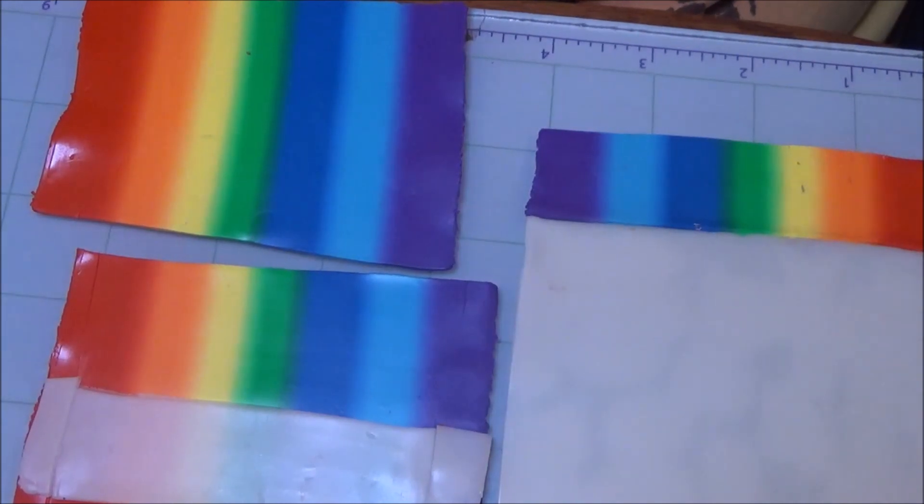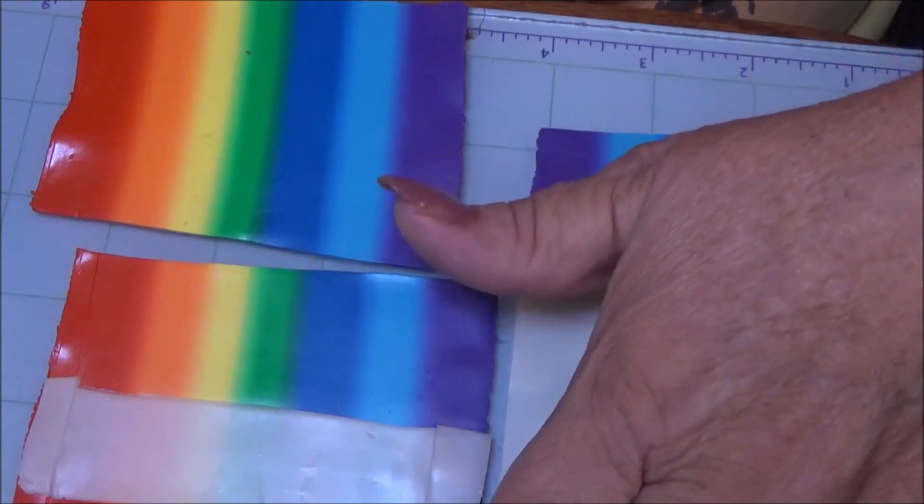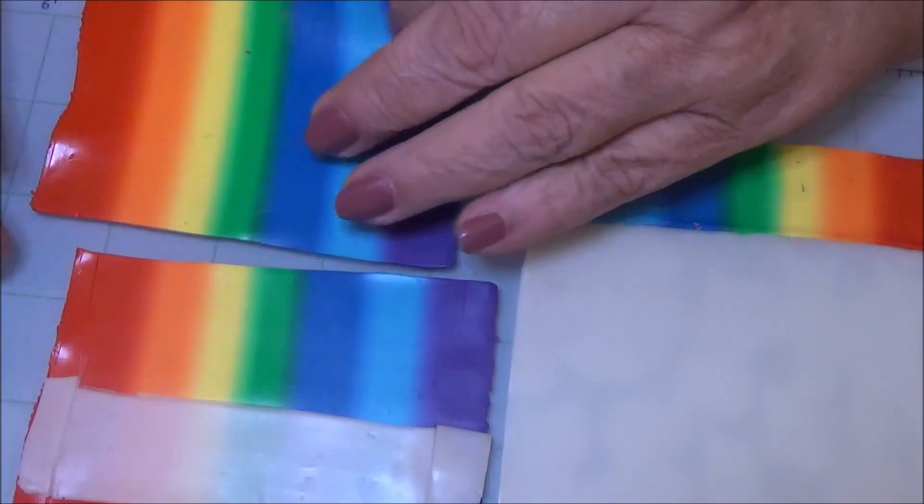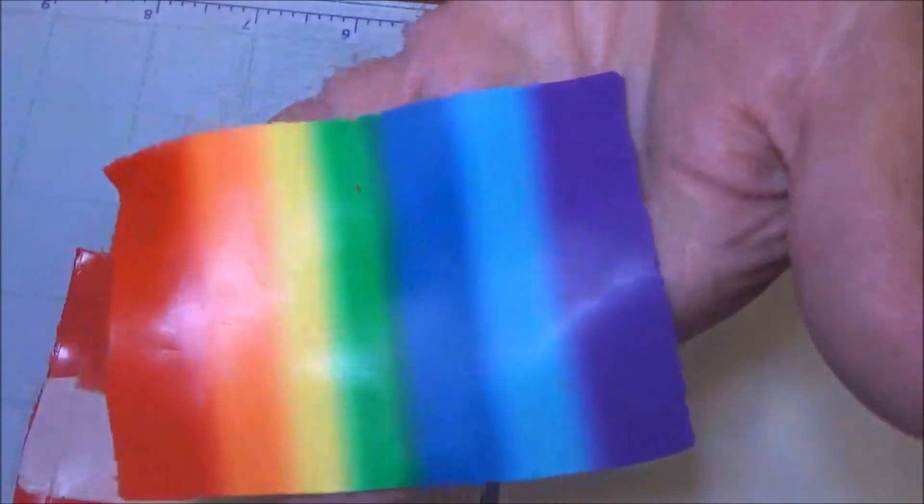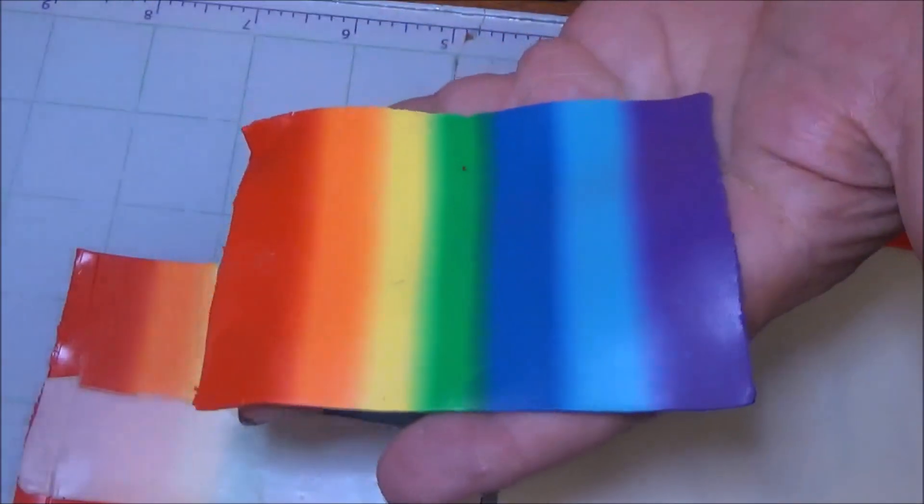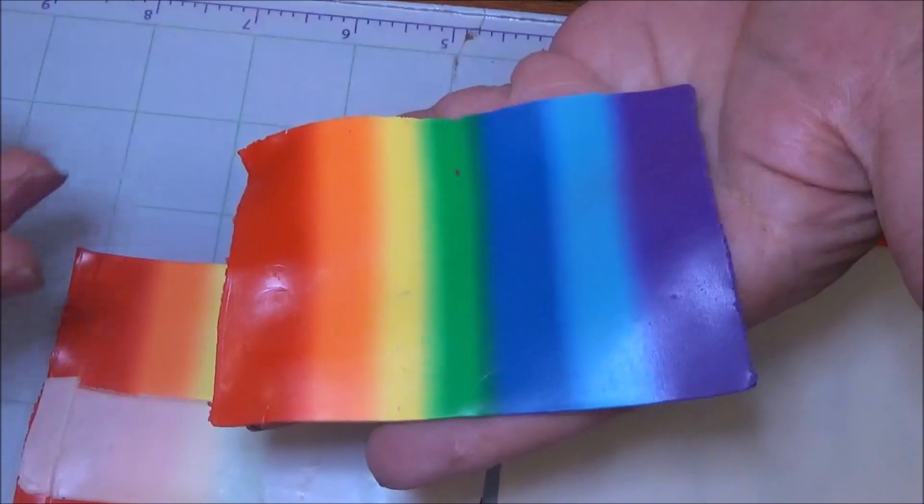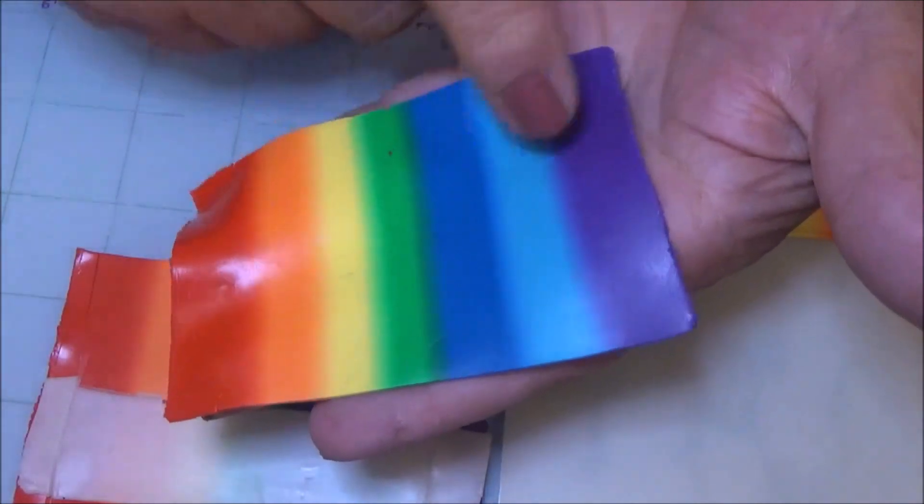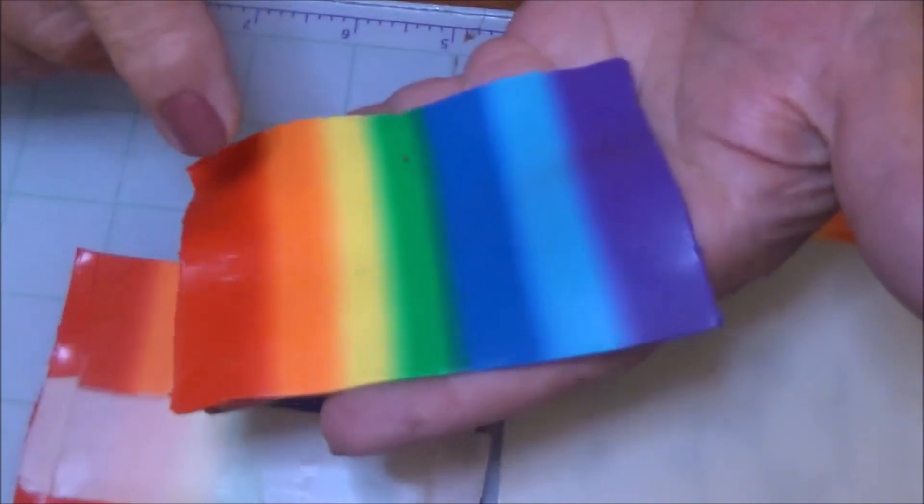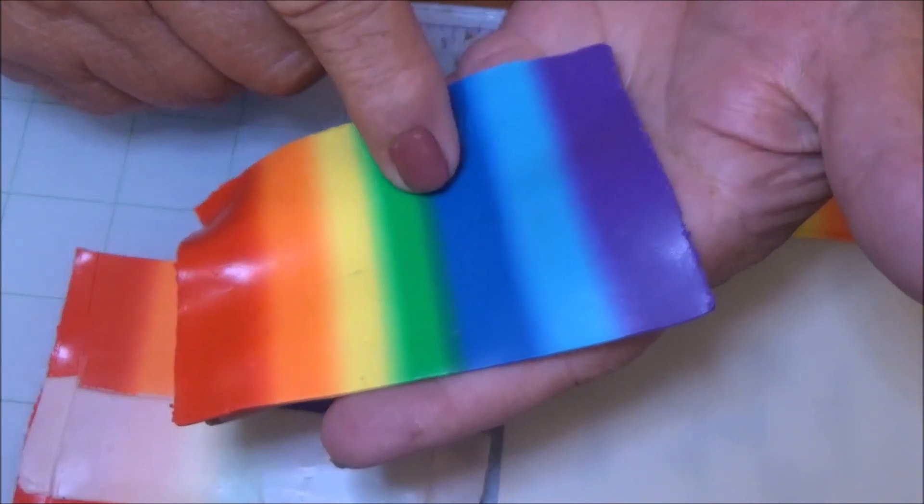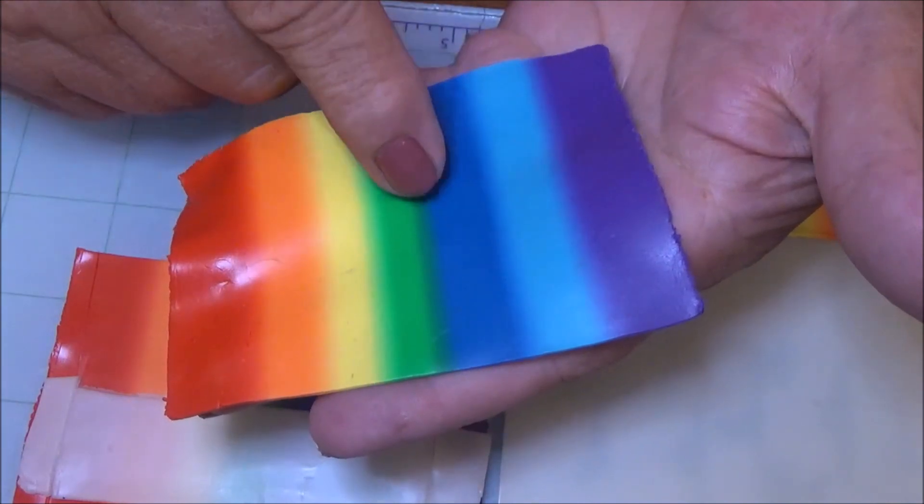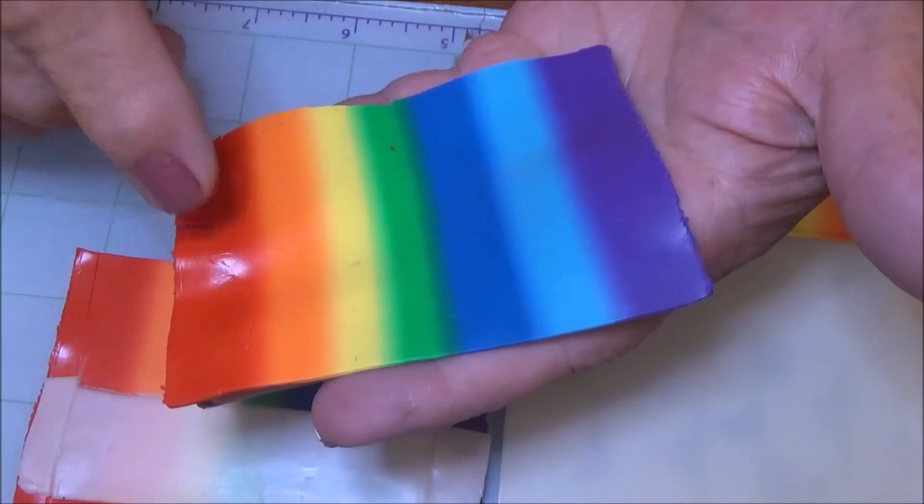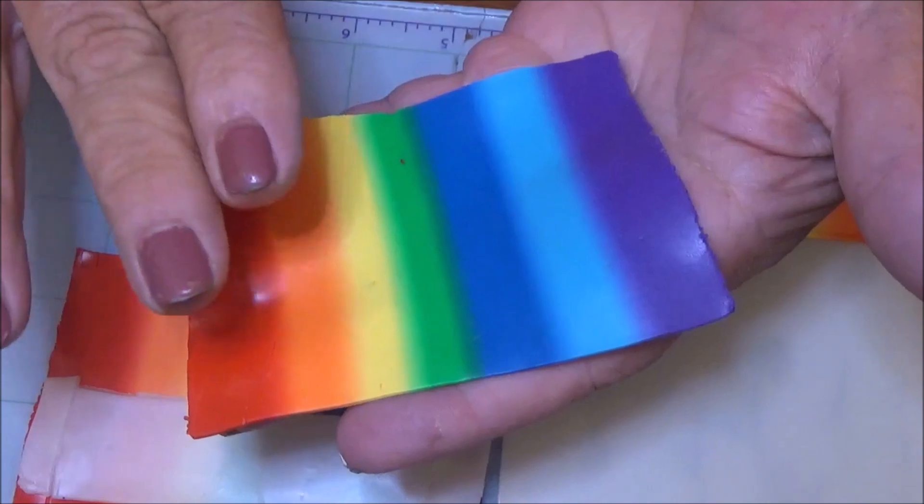While I was getting ready to start a tutorial for the Tiny Pandora design team, I wanted to make a rainbow Skinner blend. Because of a couple of other projects I finished up recently, I happen to have all the colors to go in this. You also can do it with fewer colors, knowing which color to put next to each other and what those two colors combined create.